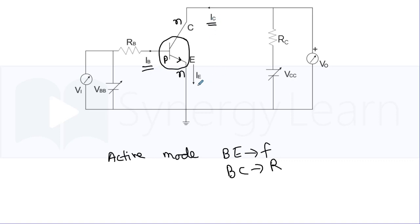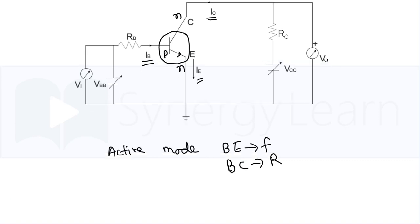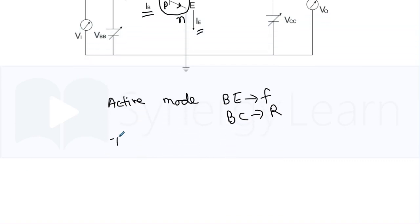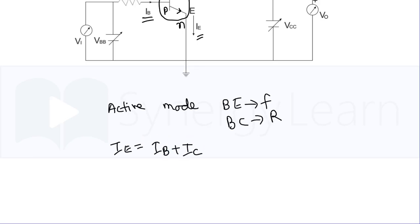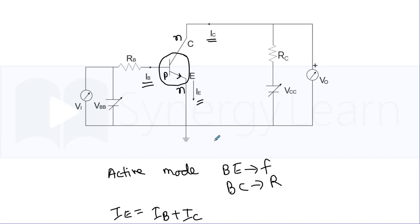So the collector and emitter currents are large. Base current remains small. The emitter current is the sum of base current and collector current. The emitter and collector currents are of the order of milliampere.